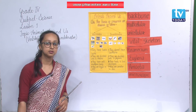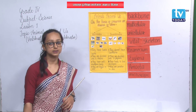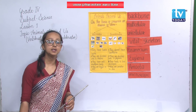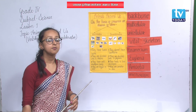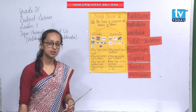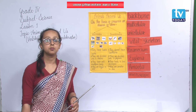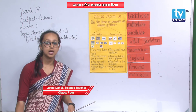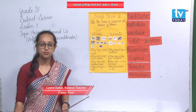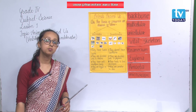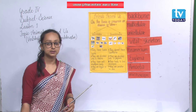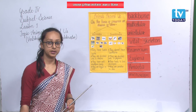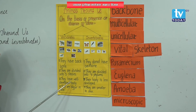We humans breathe with lungs. Fishes and tadpoles breathe with the help of gills. Fishes are also vertebrates. Whereas humans, cows, buffaloes, elephants, reptiles, mammals, and apes all breathe with the help of lungs. The next characteristic of vertebrates is that they have a well-developed body.